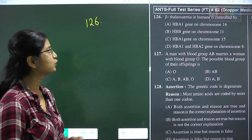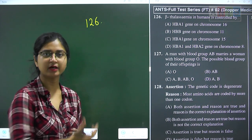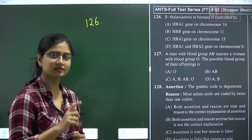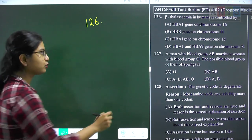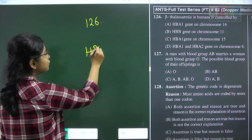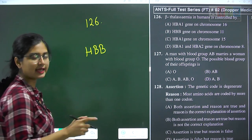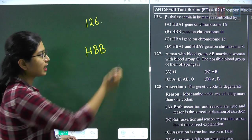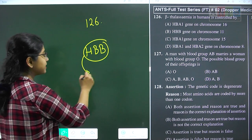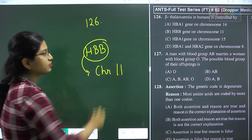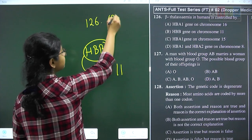Question 126: beta thalassemia in humans is controlled by a single gene called the HBB gene, located on human chromosome number 11. Alpha thalassemia, by contrast, is controlled by two genes: HPA1 and HPA2. Question 126 answer is option B, HBB gene on chromosome 11.